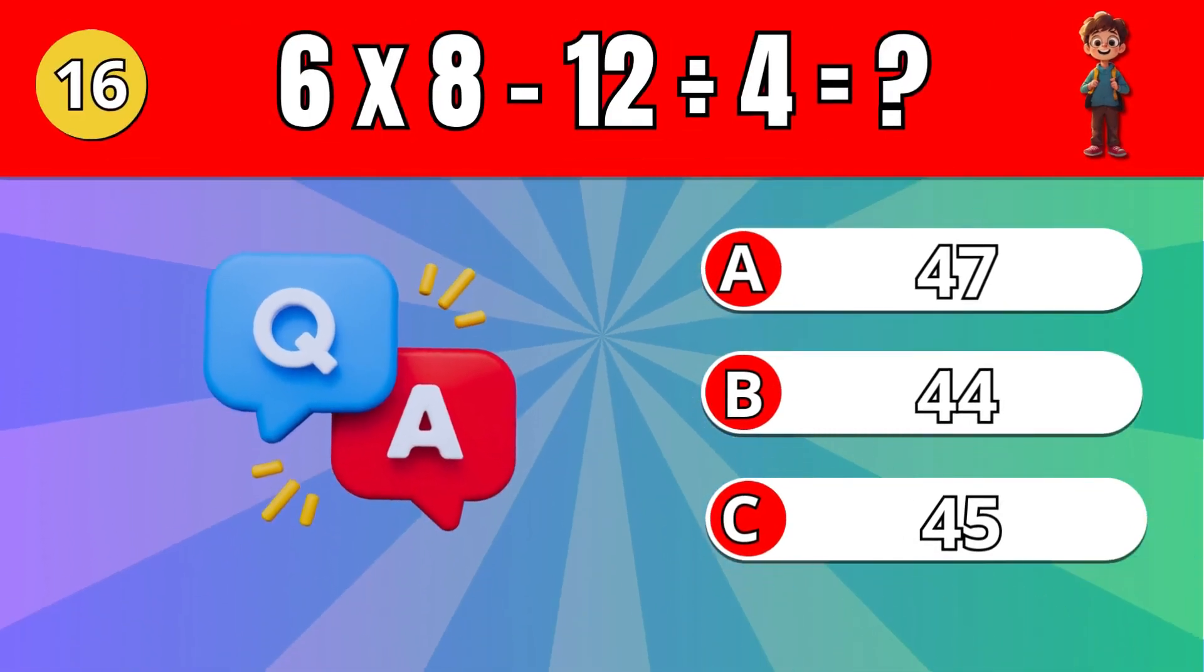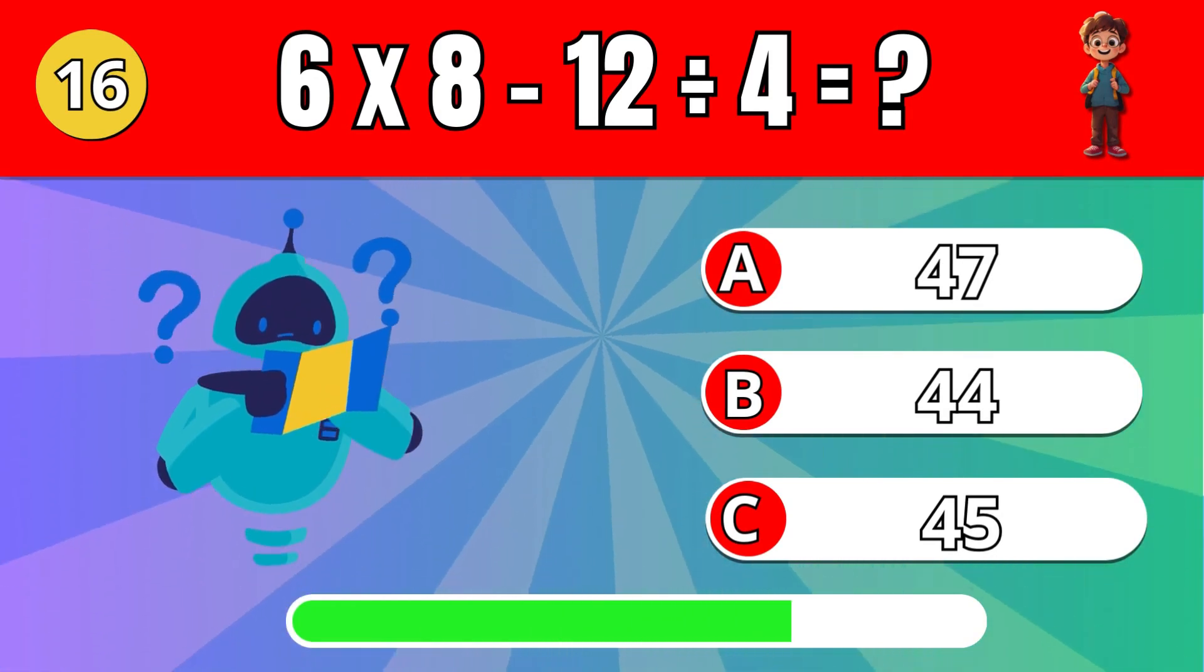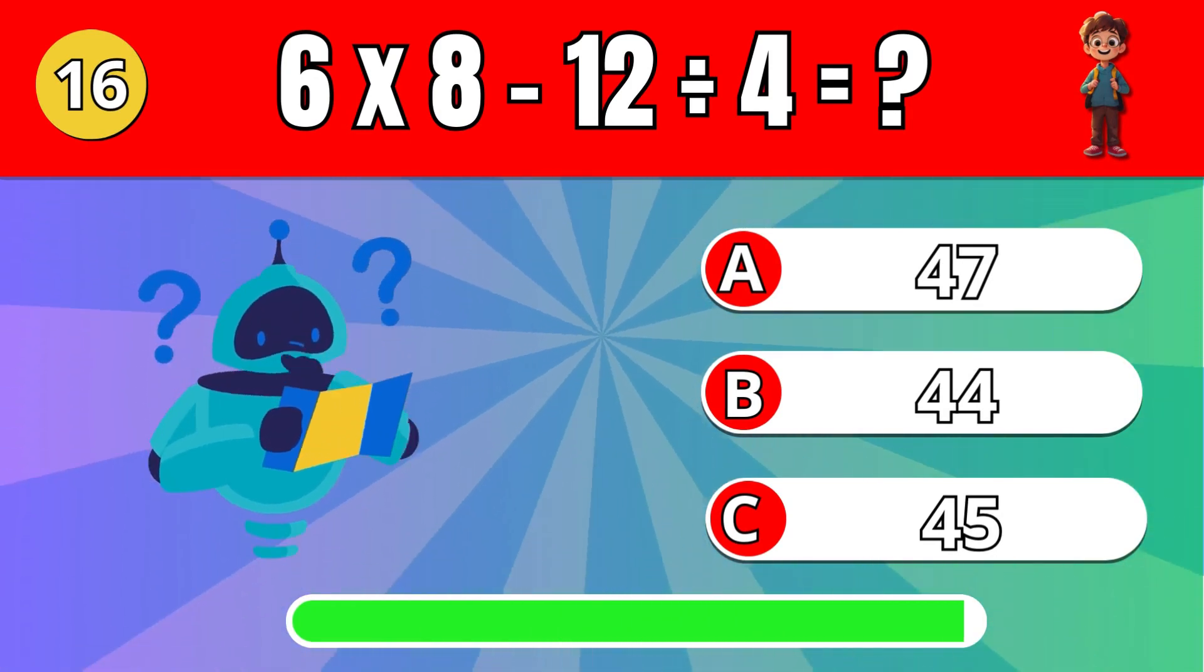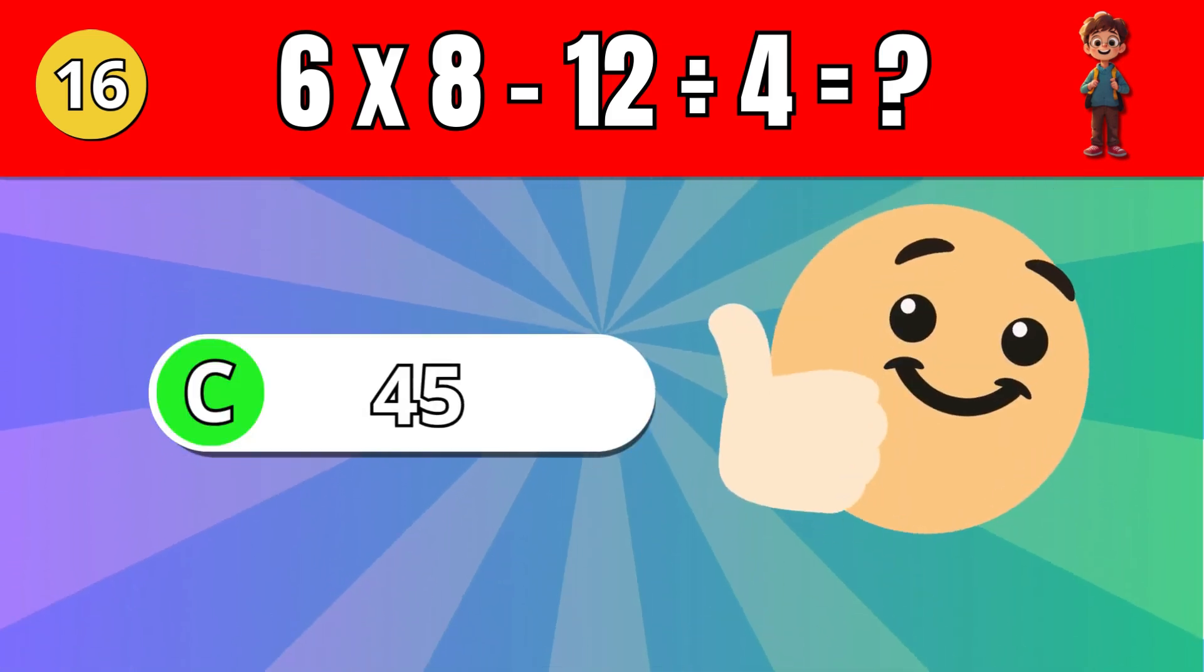What is 6 times 8 minus 12 divided by 4? C, 45.